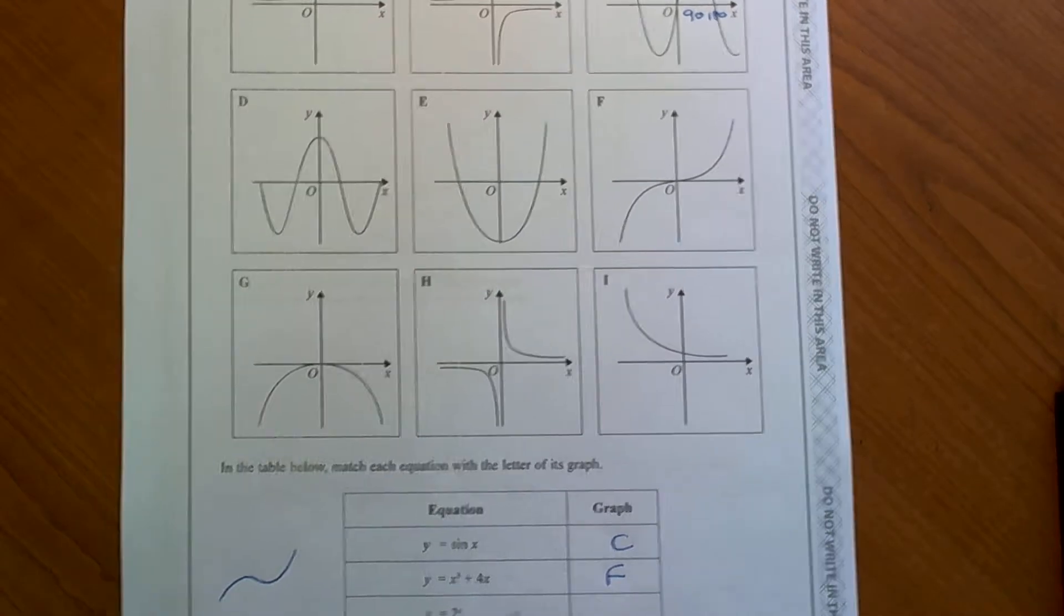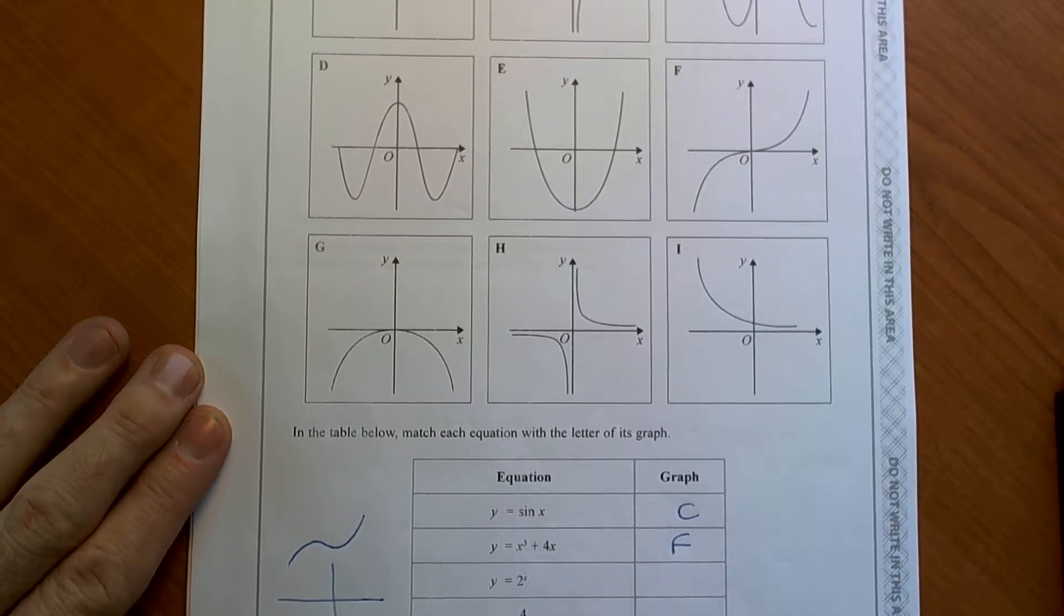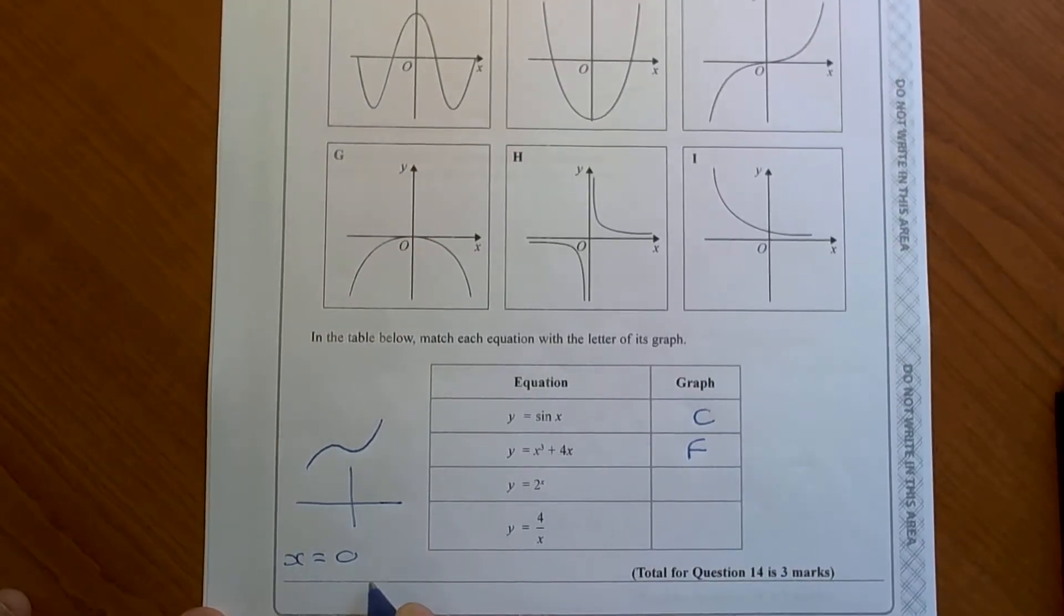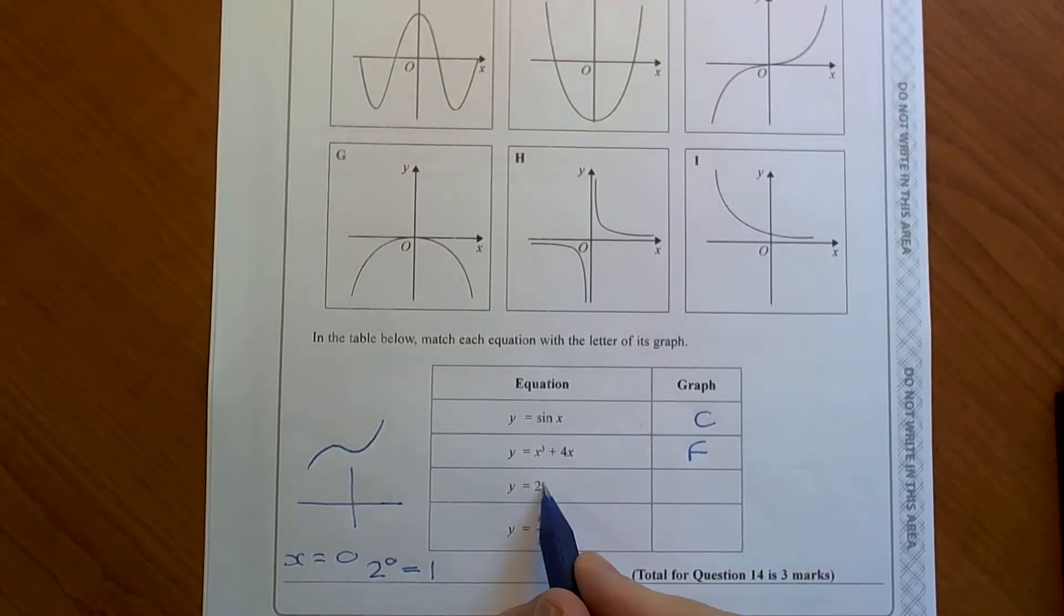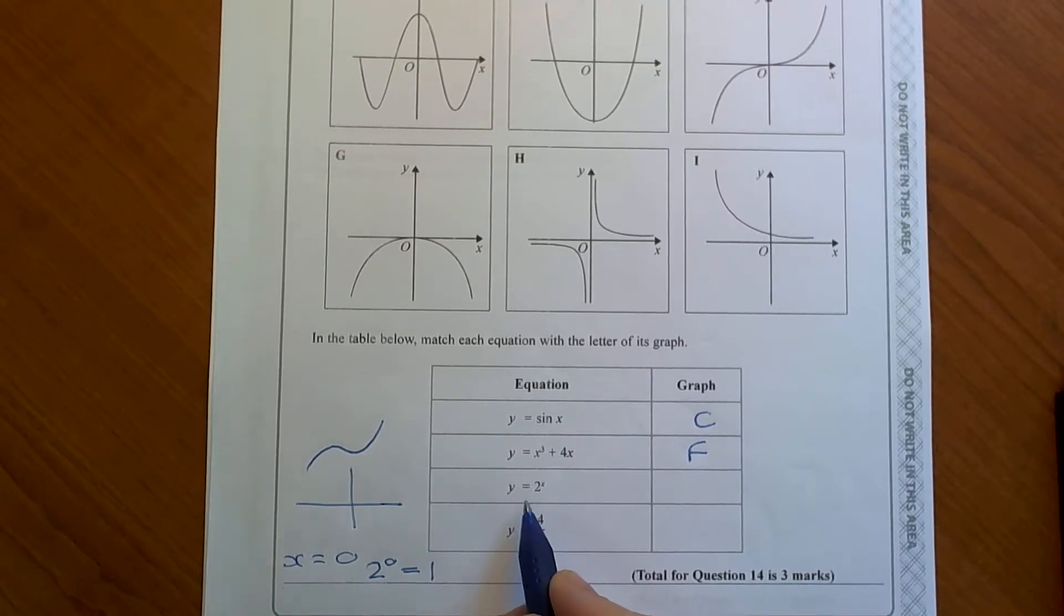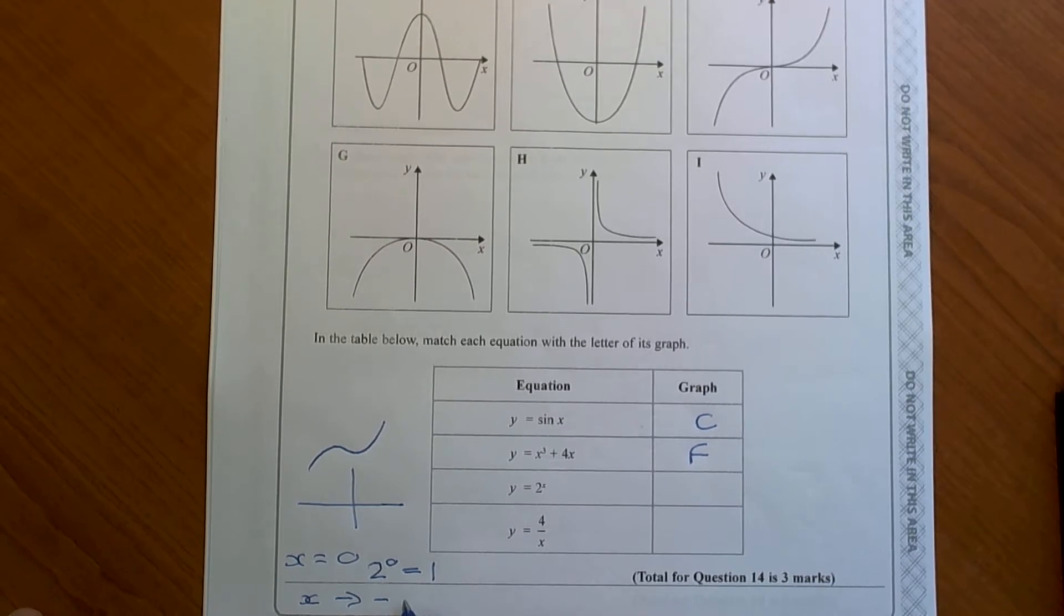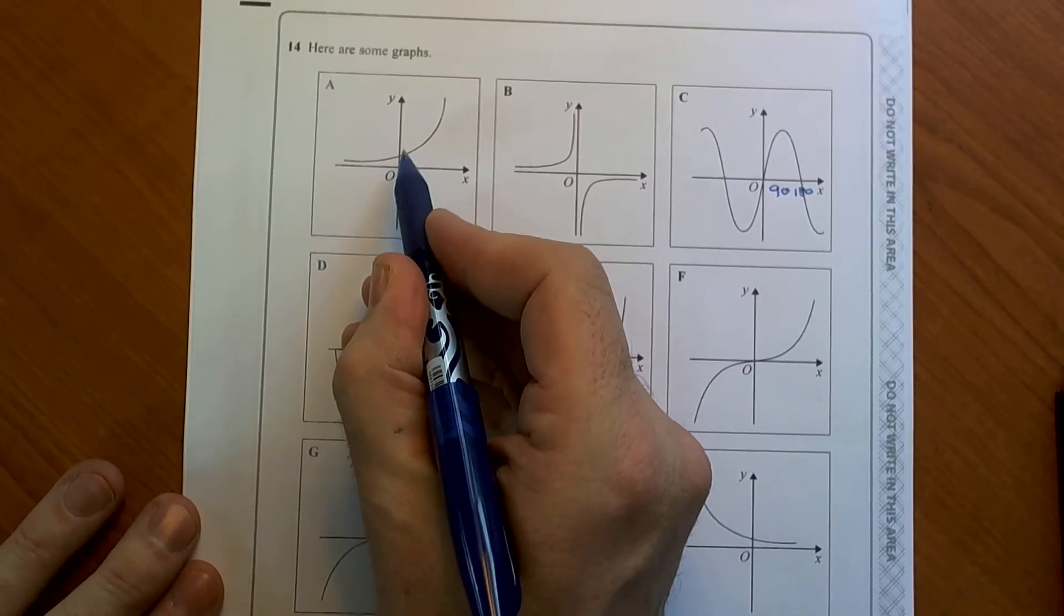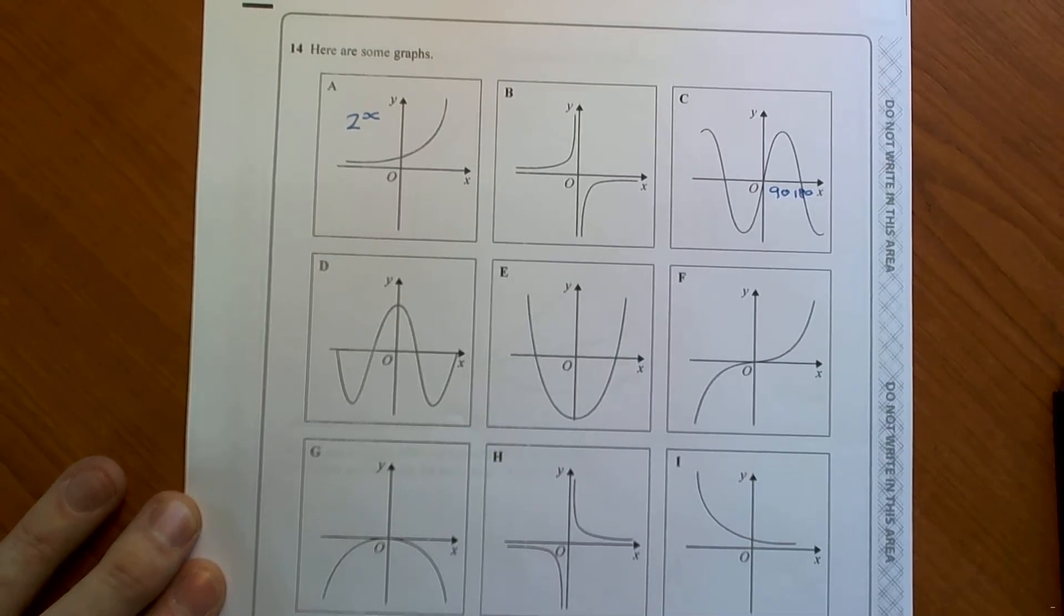The next one, 2 to the x. What we know about the 2 to the x graph is that if x is 0, you would have 2 to the power of 0, which is 1. And as x gets really small negatively, as x tends to minus infinity, it's going to go to an asymptote. So this 2 to the x graph is going to be A.